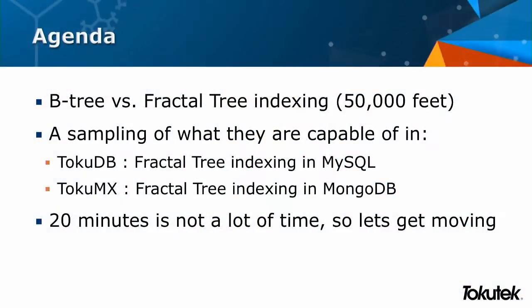My agenda is this: we're going to do B-trees versus fractal trees, a little shootout, a little data structures at 50,000 feet. It's going to be a little hand-wavy — we don't have that much time. Then I'm going to show you what a different or better data structure can do in product form. TokuDB is a MySQL implementation of fractal tree indexes. TokuMX — we've implemented it in MongoDB about 15 months ago. So let's dig in and look at the data structure itself.